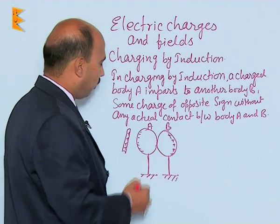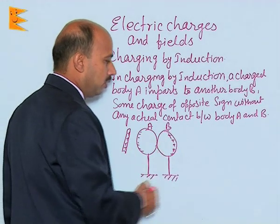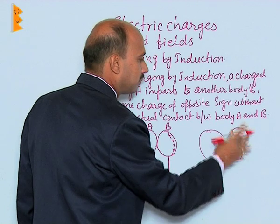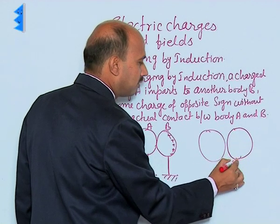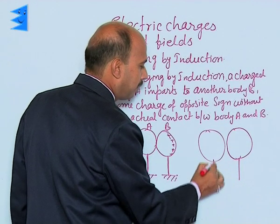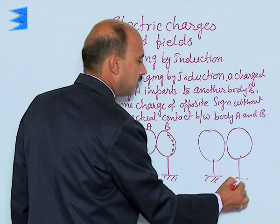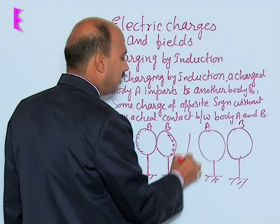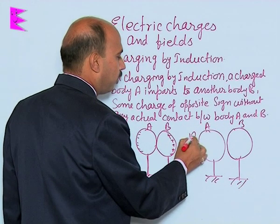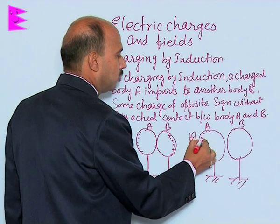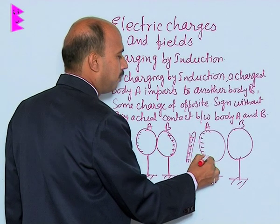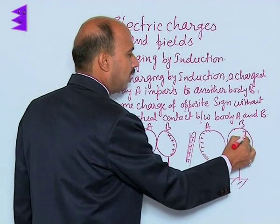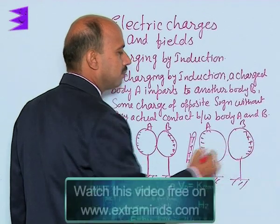Now in the second step, the spheres A and B are slightly separated, and the positive rod remains here. The negative charges are bound to the near side due to the force of attraction, and the positive charges are on the farther side.